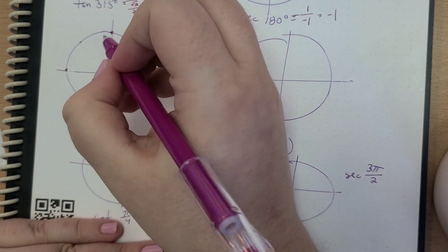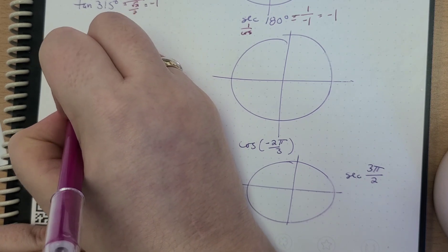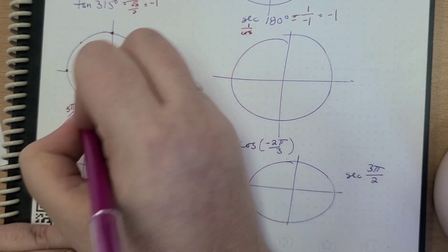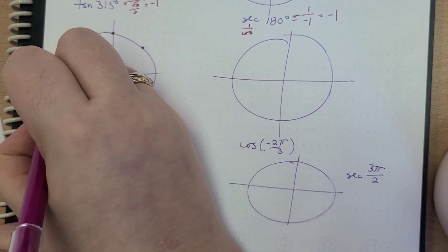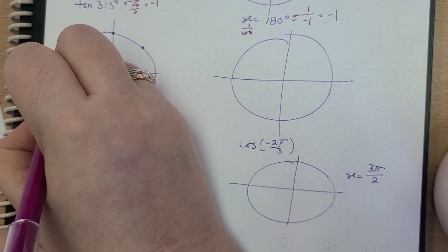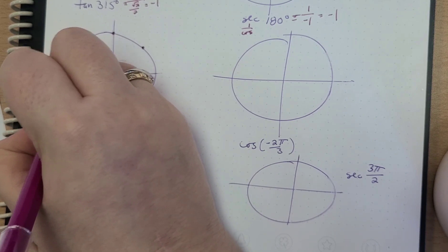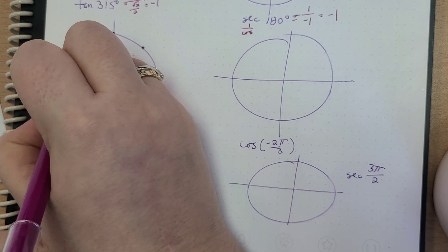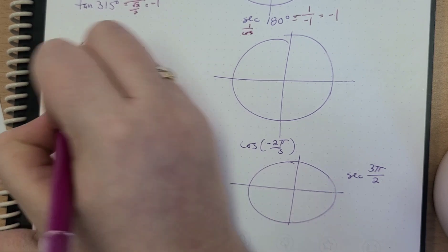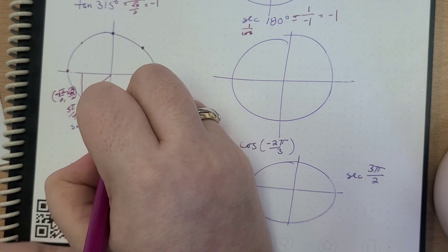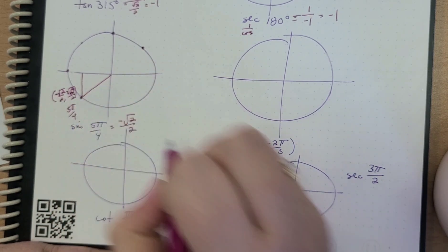So if we draw that — we know that's our 45-45-90 triangle. And so this is going to be (−√2/2, −√2/2). And so the sine of 5π/4 is negative √2/2.